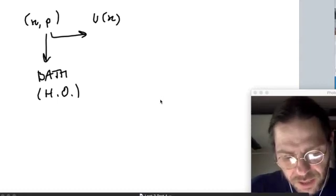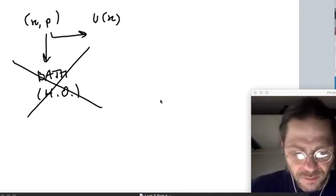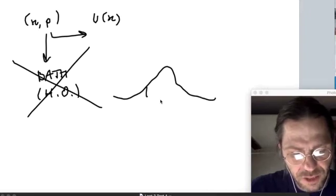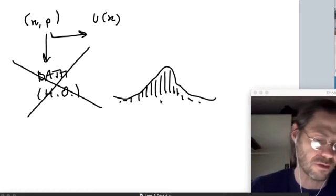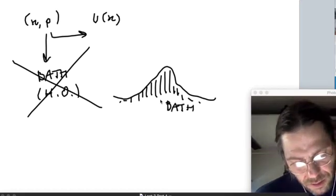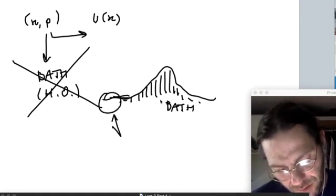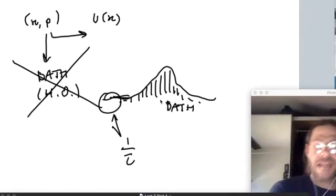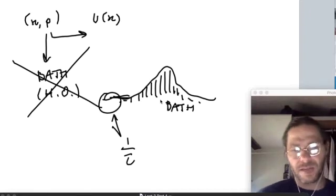After integrating out the dynamics of the bath and assuming the typical frequency density, spectral density of all the oscillators, for the characteristic frequencies of the oscillators in the bath to be gapped, to be significantly larger than the typical frequencies of the dynamics of the system.